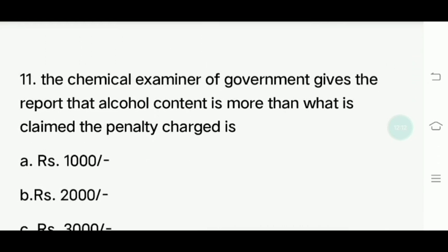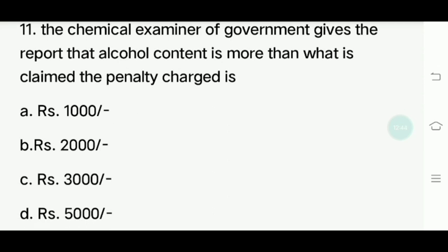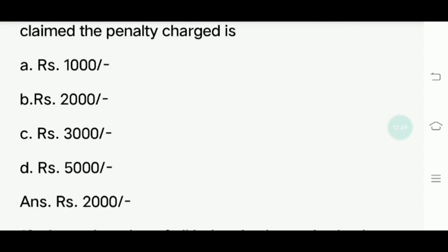Eleventh question: The chemical examiner of the government gives a report that alcohol content is more than the parties claimed - what are the penalty charges? Options: Rupees 1000, Rupees 2000, Rupees 3000, Rupees 5000. Answer is Rupees 2000.